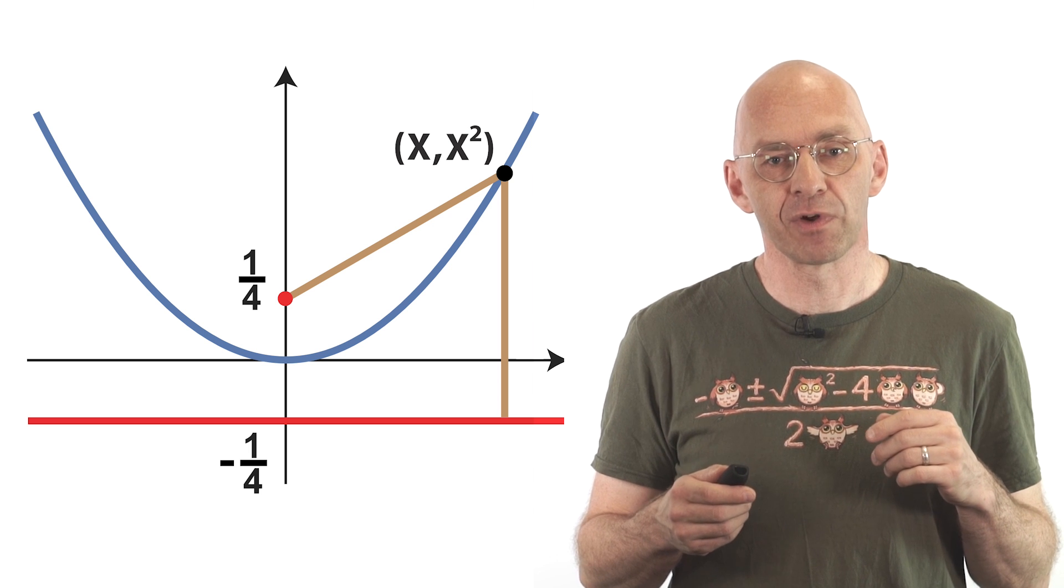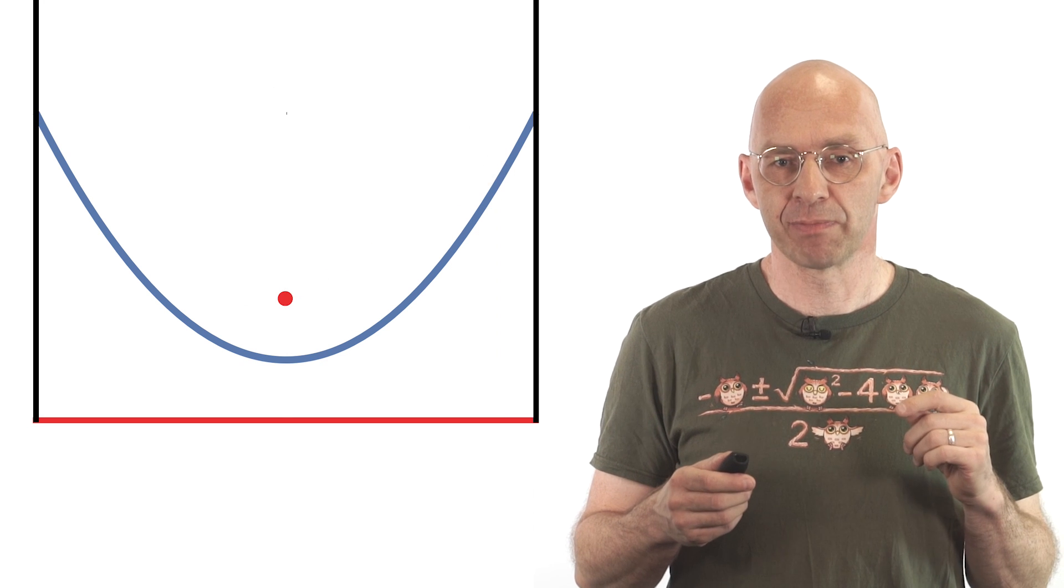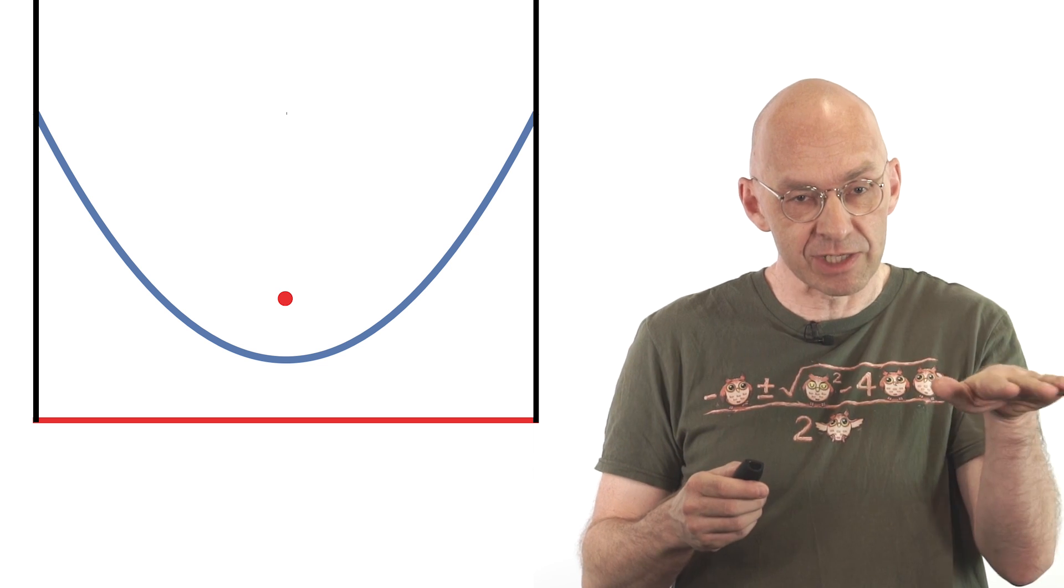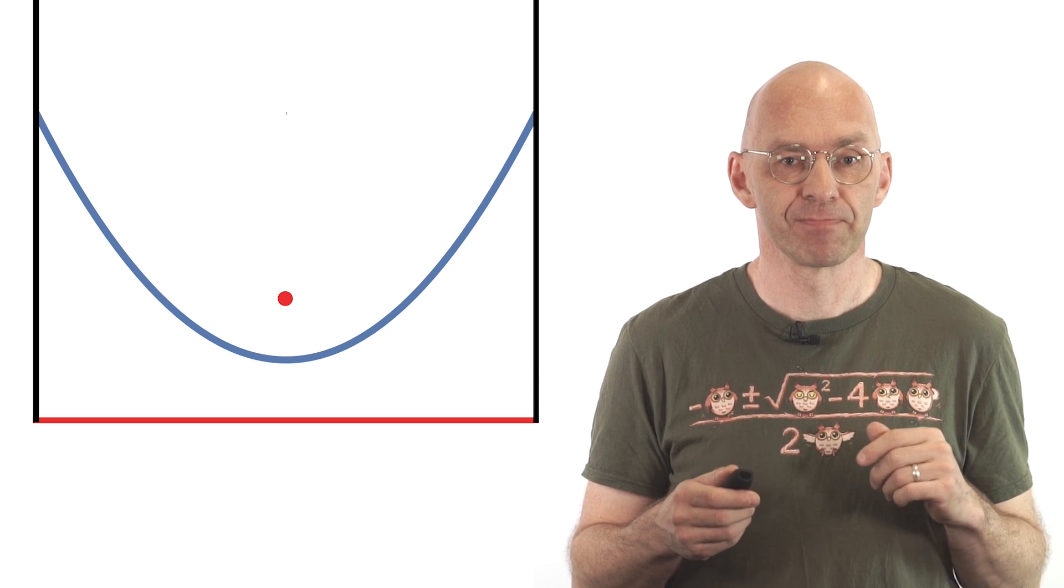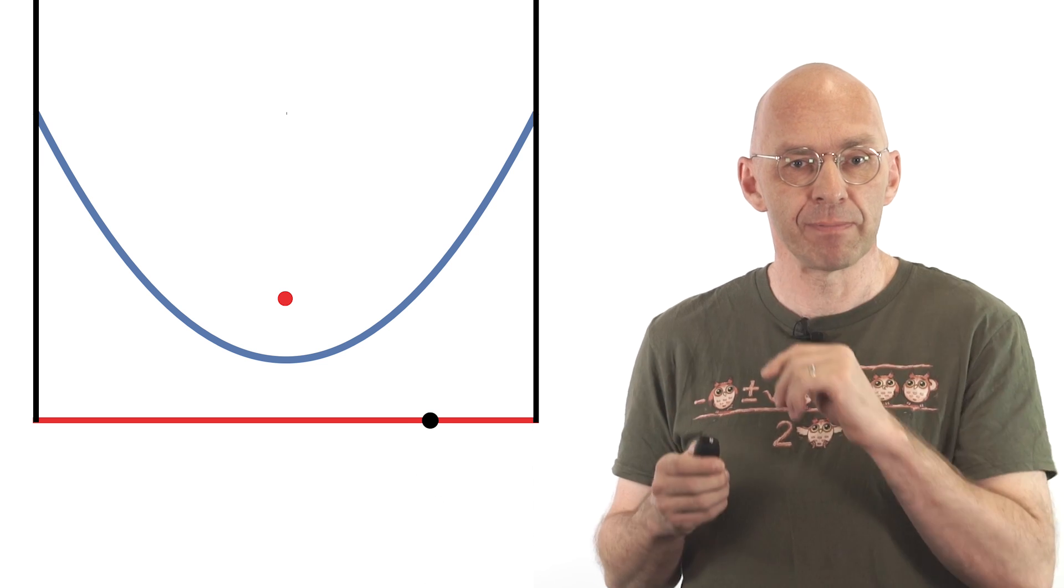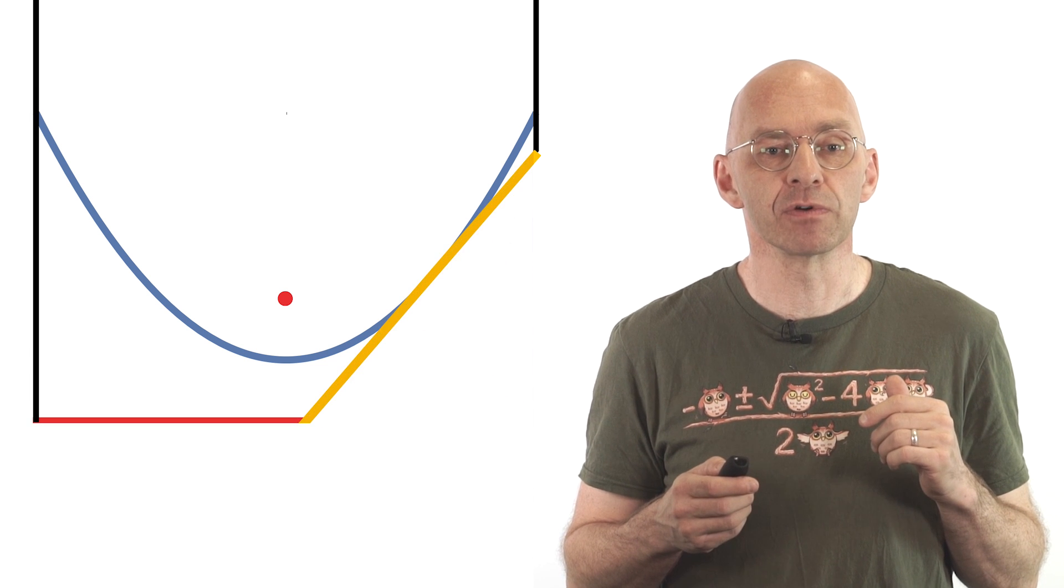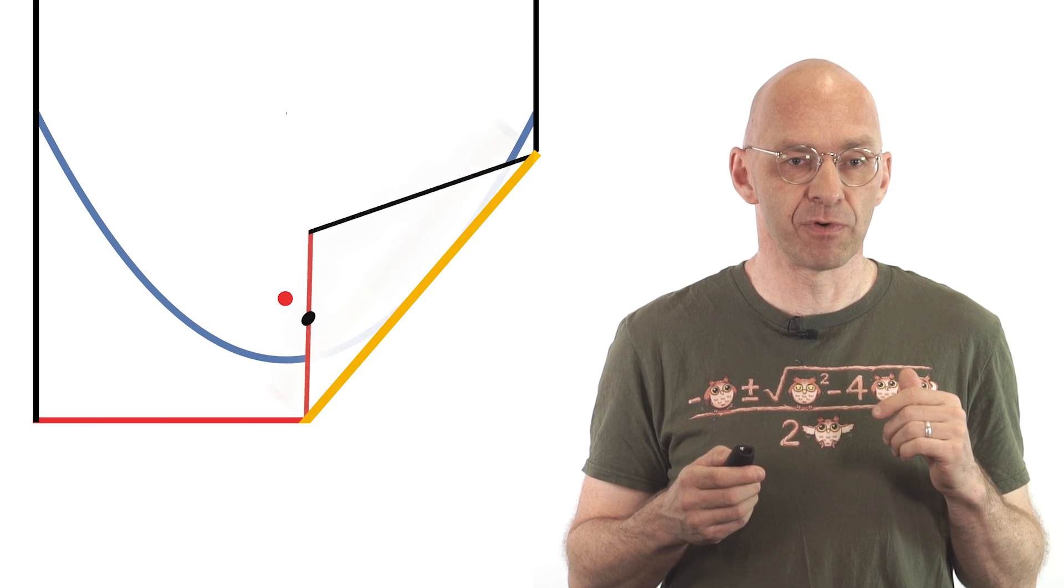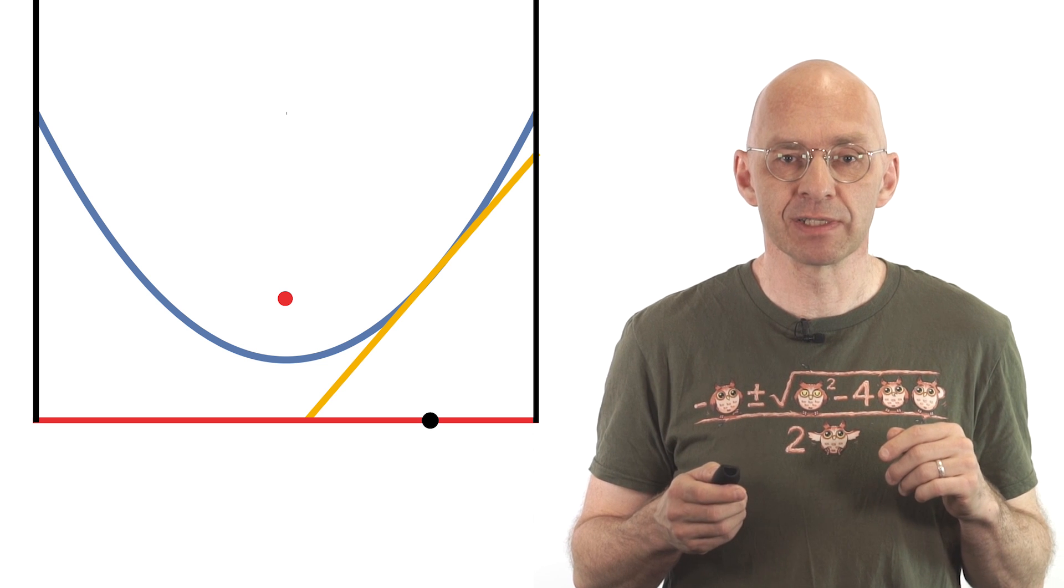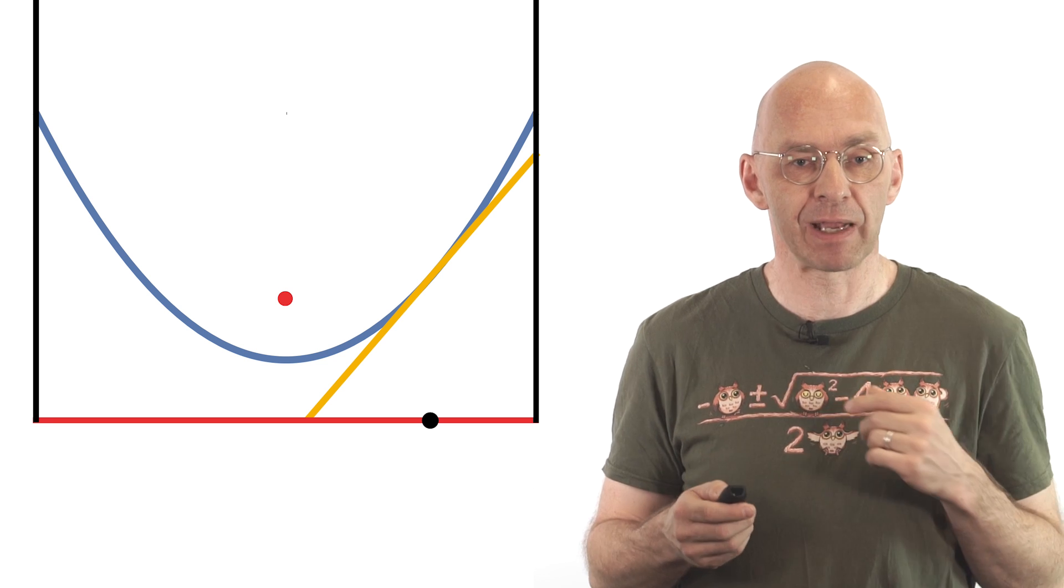The directrix is the secret ingredient for lots of parabolic magic. For the first magic trick let's position the parabola on a piece of paper so that the red directrix coincides with the bottom edge of the paper. Now look at any point on the bottom edge, that one there, fold the paper so that the black point ends up on the focus. So there fold, fold, fold, right on top and unfold again. Okay it looks as if the paper crease is a tangent of the parabola and that the touching point is right above the black point.